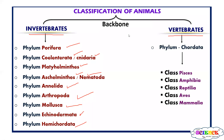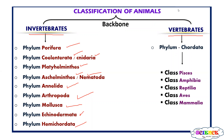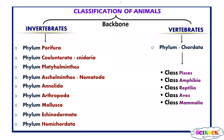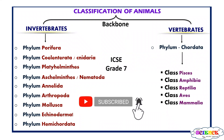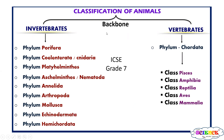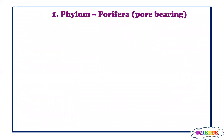Vertebrates are classified into phylum Chordata, and phylum Chordata is further classified into five classes: Pisces, Amphibia, Reptilia, Aves, and Mammalia. This classification is done on the basis of similarity and differences. This classification, which I will be explaining, is as per ICSE grade 7 syllabus. In this video, I will be explaining the first four phyla of invertebrates: Porifera, Coelenterata, Platyhelminthes, and Aschelminthes. Let us understand the characteristics of organisms in each phylum.